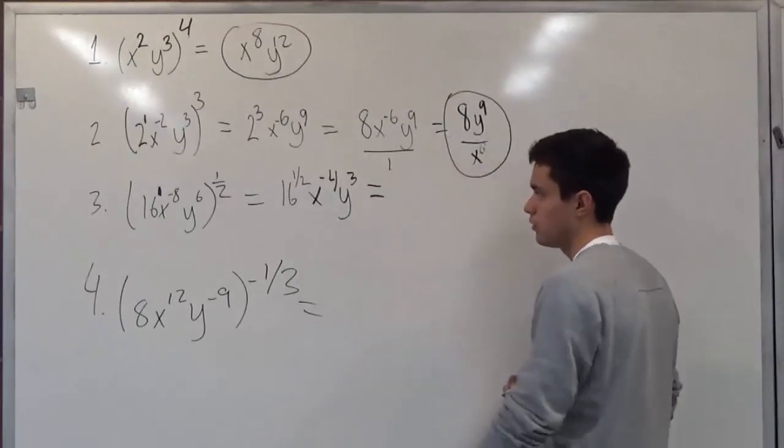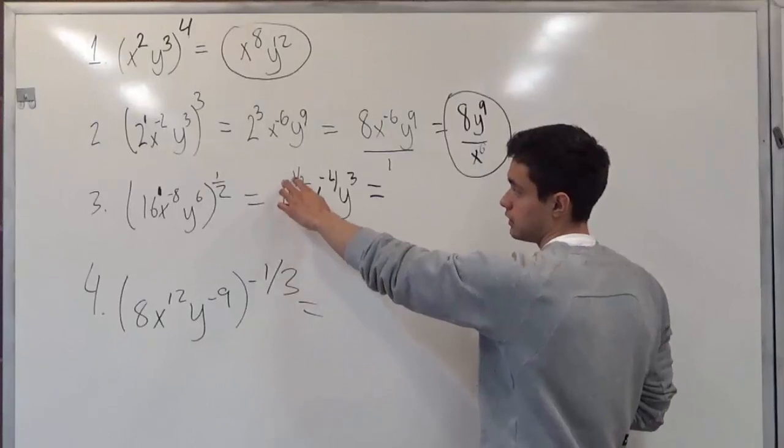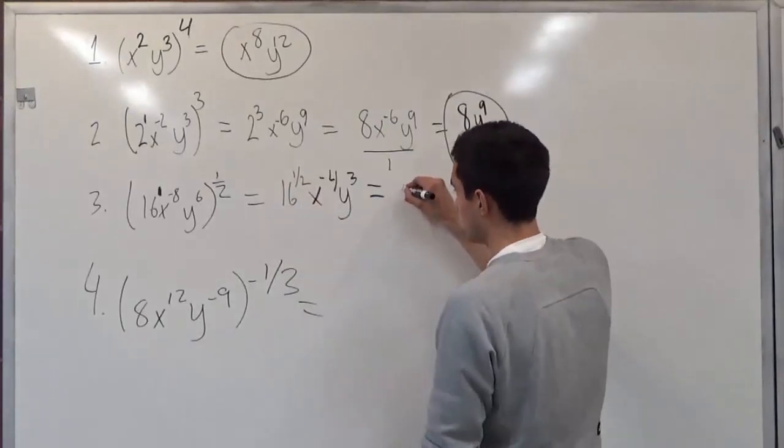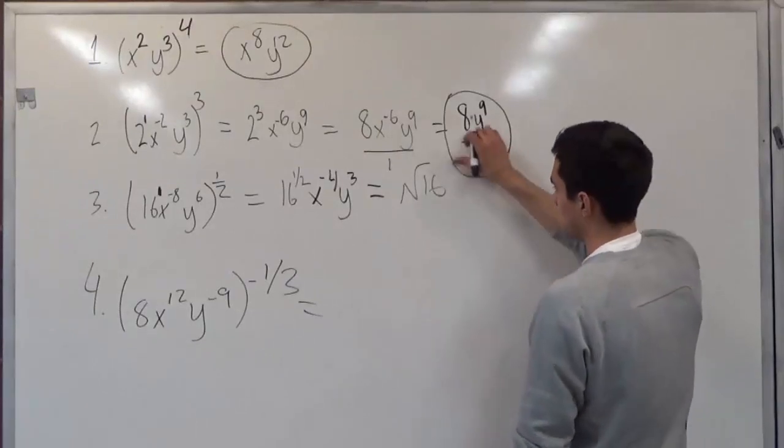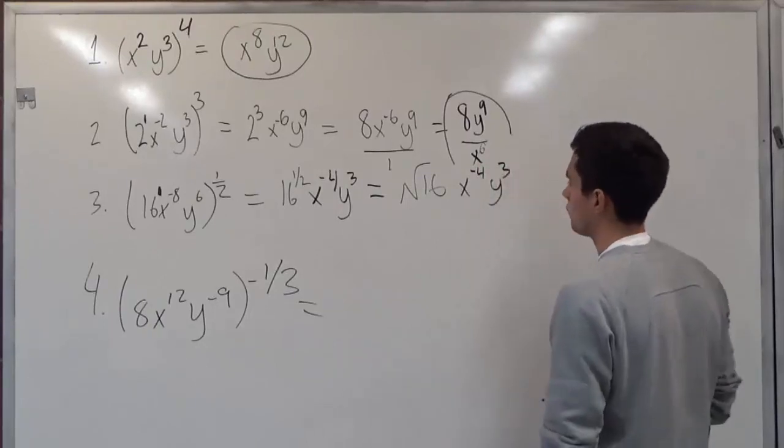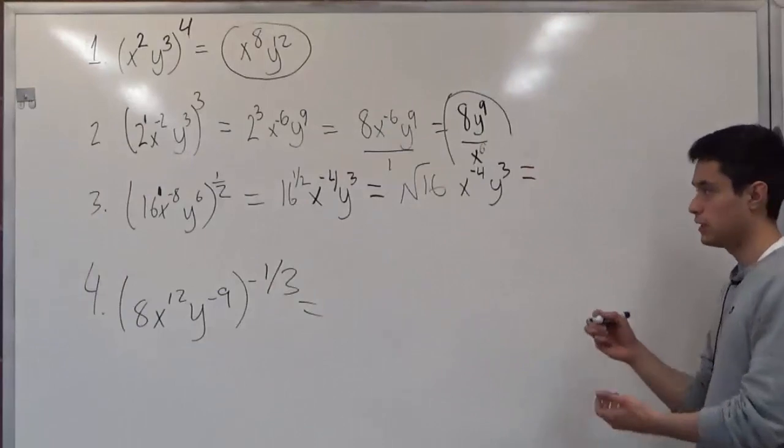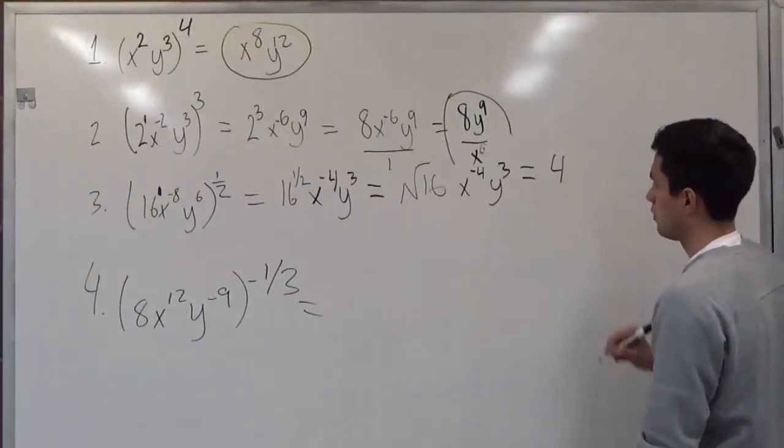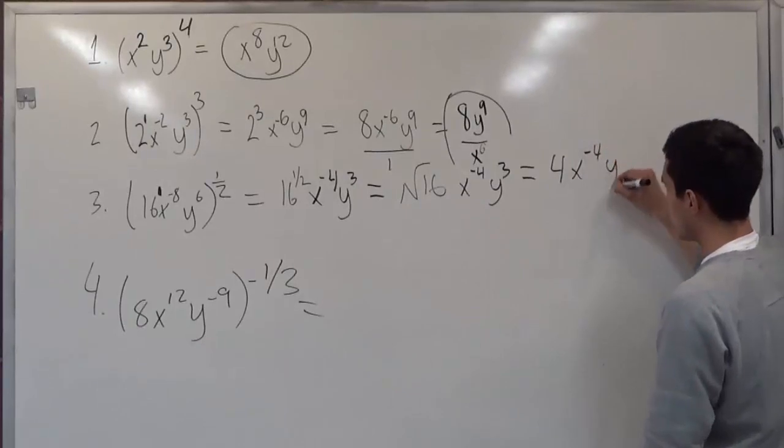So we know that this can just be considered as a radical. So what this is saying is radical, because 16 to 1 half also translates to radical 16. So what this is saying is that radical 16 times x to the negative 4 times y to the third. So radical 16 can just be seen as 4, and then yet again, we have our x to the negative 4 and y to the third.